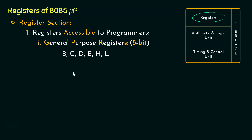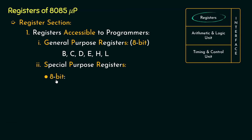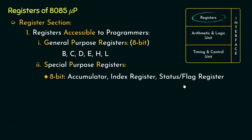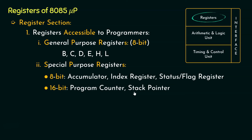Coming to the second classification of registers accessible to programmers, we have SPRs — special purpose registers. These have two variations: first, the 8-bit special purpose registers, which include the accumulator, index register, and status or flag register. Coming to the 16-bit variation, we have two 16-bit special purpose registers: the program counter and the stack pointer. These are all the registers accessible to programmers.